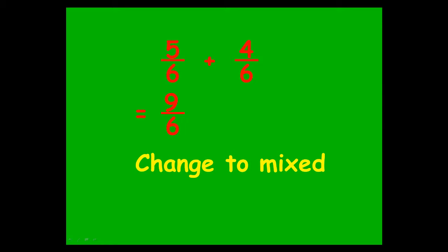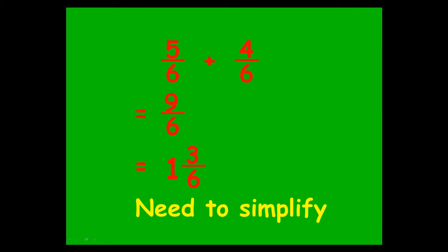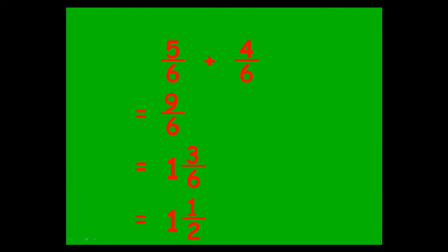Five sixths plus four sixths makes nine sixths. If you change that to a mixed number, you can either simplify first and then change it, or change it and then simplify. You end up with a final answer of one and a half, because three sixths simplifies to one half.